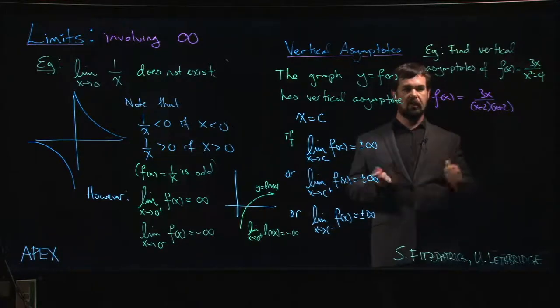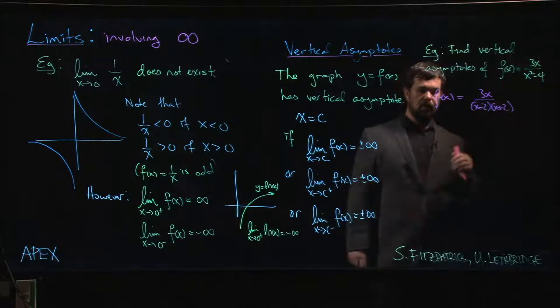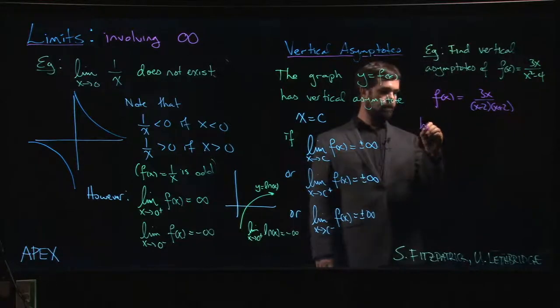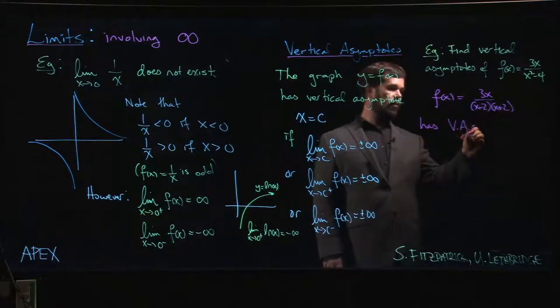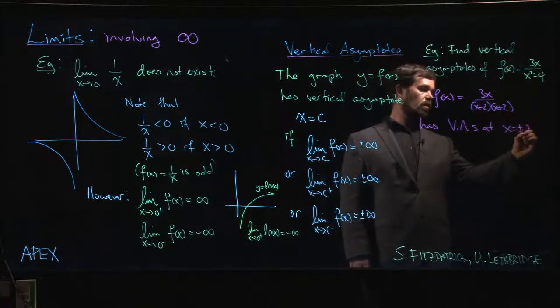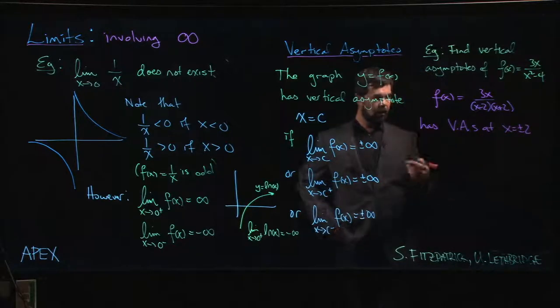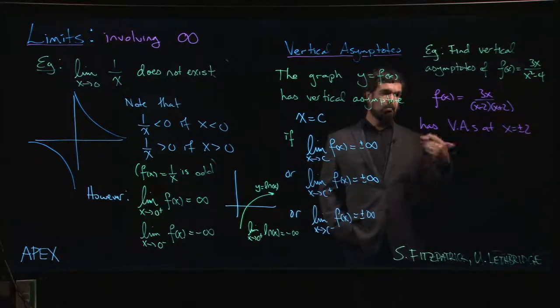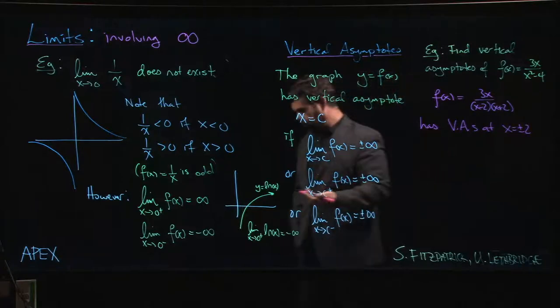So we can definitely conclude that this function has vertical asymptotes at x equals plus or minus 2, because we have that division by 0, it doesn't cancel, so we have vertical asymptotes.